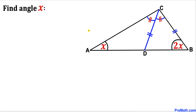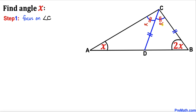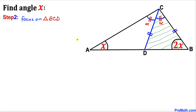Let's get started with the solution. Focusing on angle C, since it has been divided into two equal parts, let's call each half angle alpha.